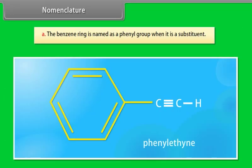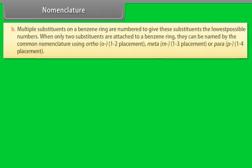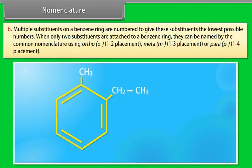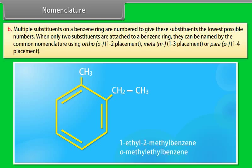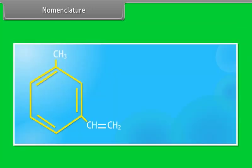A. The benzene ring is named as a phenyl group when it is a substituent. B. Multiple substituents on a benzene ring are numbered to give these substituents the lowest possible numbers. When only two substituents are attached to a benzene ring, they can be named using common nomenclature: ortho (O) for 1,2 placement; meta (M) for 1,3 placement; or para (P) for 1,4 placement. For example, the given compound is 1-ethyl-2-methylbenzene, or O-methylethylbenzene. Can you name the given compound?